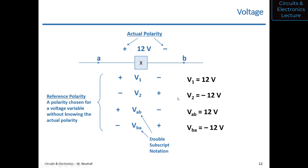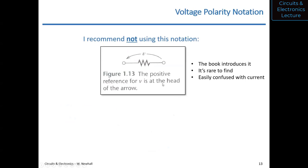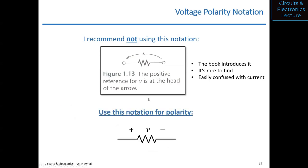One notation I'd recommend avoiding: some textbook chapters use a variable with a curved arrow to indicate voltage polarity. I find this confusing because it looks like a current reference direction. I recommend always using the plus and minus sign notation instead. The arrow means plus is at the arrowhead and minus is at the tail, but I will always use the plus/minus notation in this class.